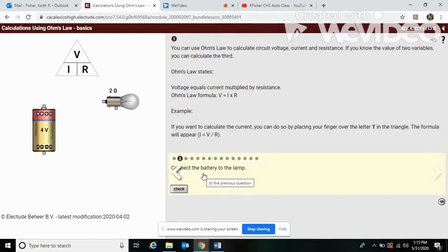So connect the battery to the lamp. We're going to look at two lines. Our negative side is going to come up and around over to here. Positive to here, and our bulb turns on.